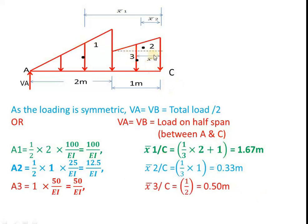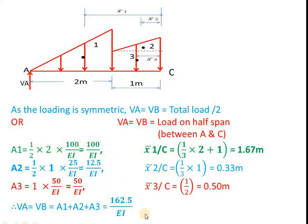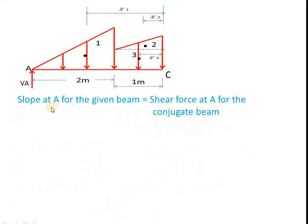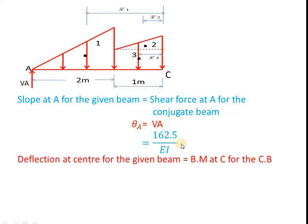Area A3 is the rectangle: 1 × 50/EI = 50 by EI. Its centroid x3 bar from C lies at the center of the 1 m span, so 0.5 m. Therefore VA = VB = A1 + A2 + A3 = total area on half the span. Adding the areas gives the reaction as 162.5 by EI. The slope at A for the given beam equals the shear force at A for the conjugate beam, which is VA = 162.5 by EI.